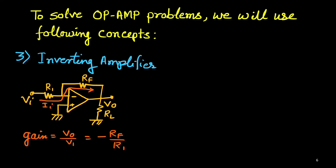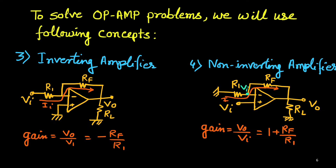Third is the standard inverting amplifier: inverting voltage VI is connected at the input, and the gain V0/VI equals minus RF/R1 — the negative sign indicates that if you apply a positive input, you get a negative output. Fourth is the standard non-inverting amplifier: input voltage VI is connected to the non-inverting terminal, and the gain is (1 + RF/R1), a positive gain.